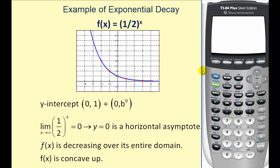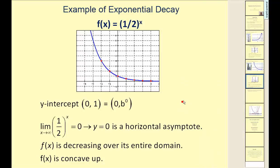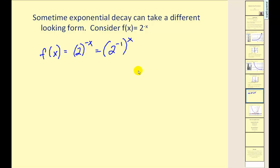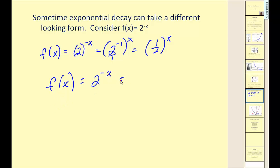We could create these functions using a graphing calculator, but we want to be able to graph basic functions without one. Let's look at f of x equals two raised to the power of negative x. Sometimes exponential decay takes this form, and I want to show that this is the same as f of x equals one-half raised to the power of x. We can rewrite it as two to the negative one, all raised to the power of x, which gives us one-half to the power of x.